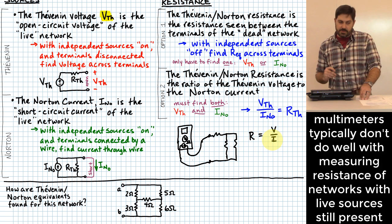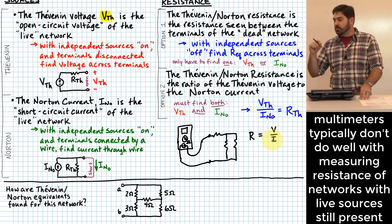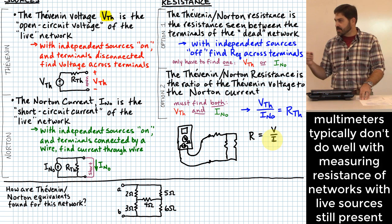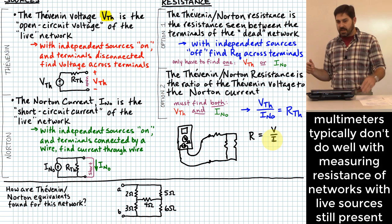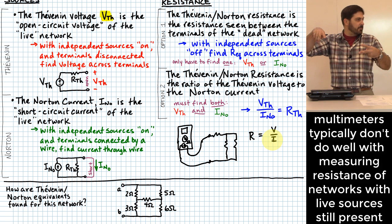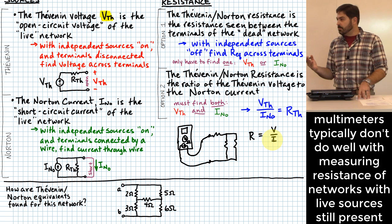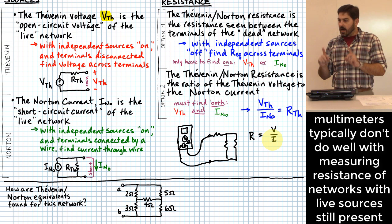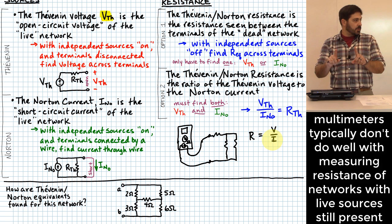One important point: your meter's technique of finding resistance presumes that you have just resistors hooked up to it. If you hook something up that has a source in it, the meter's method may break down — because if the meter puts one volt but there's another source inside the network messing things up, it might not calculate properly. So when using a meter, make sure you are not measuring something that has sources in it.